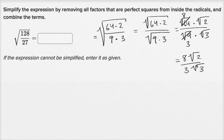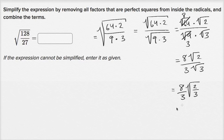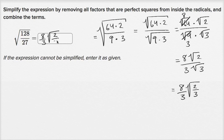That's one way to say it. Or we could view the square root of 2 over the square root of 3 as the square root of two-thirds. So we could write this as 8 over 3 times the square root of two-thirds. Have we removed all factors that are perfect squares from inside the radicals? Yes. We weren't doing any adding or subtracting here, so it was really just removing the perfect squares from inside the radicals. So this is 8/3 times the square root of 2/3, and there are other equivalent ways to express this.